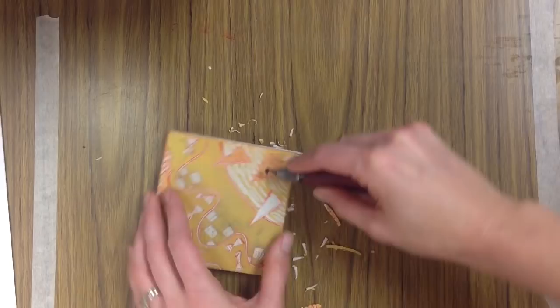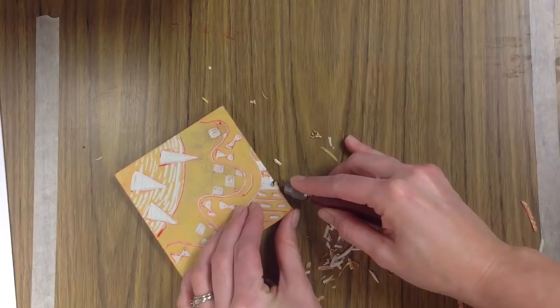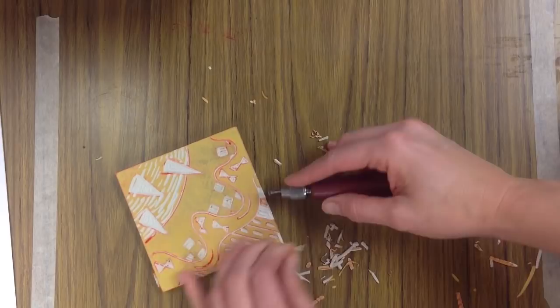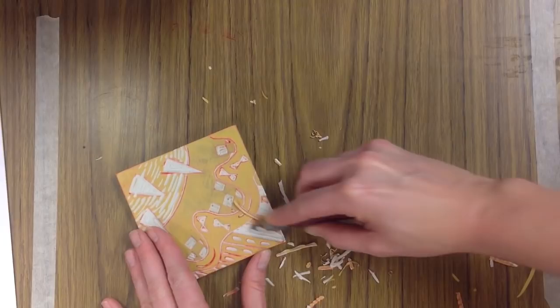So again, just taking my time, carving away the areas that are going to be red because the next thing I'm going to do is put blue ink onto my block. And when I put the blue ink down, it's going to leave the yellow spaces and the white spaces and the red spaces alone because I've already carved those away.